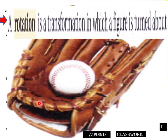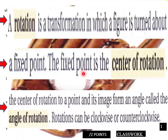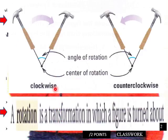Into our lesson: a rotation is a transformation in which a figure is turned about a fixed point. The fixed point is the center of rotation. The center of rotation to a point and its image form an angle called the angle of rotation. Rotations can be clockwise or counterclockwise.